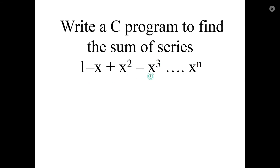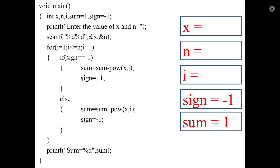Next problem: write a C program to find the sum of the series 1 minus x plus x squared minus x cubed, and so on up to x raised to N. The signs alternate between plus and minus. Input the value of x and N. The series starts with 1, so initially sum is equal to 1. Suppose x equals 2 and N equals 3.